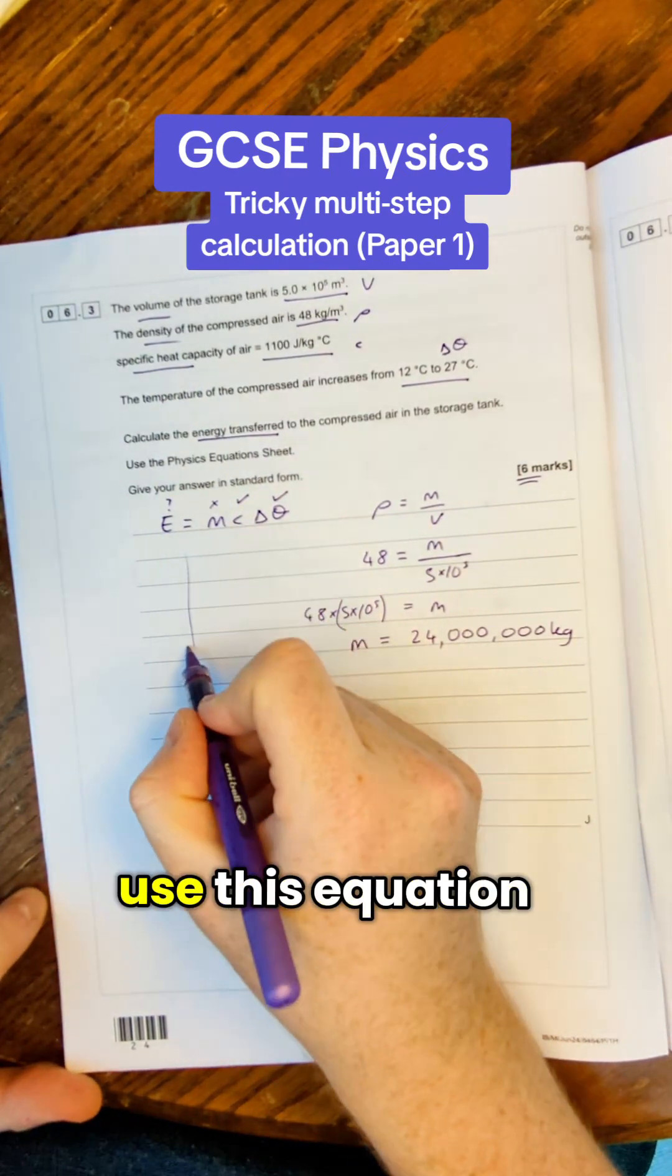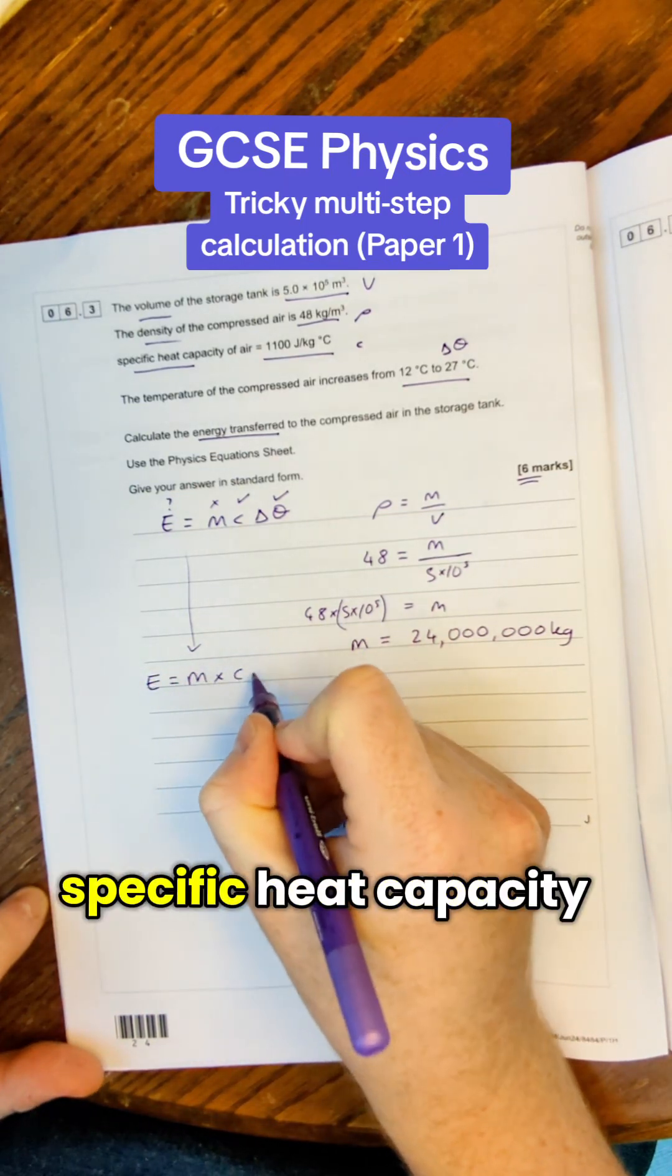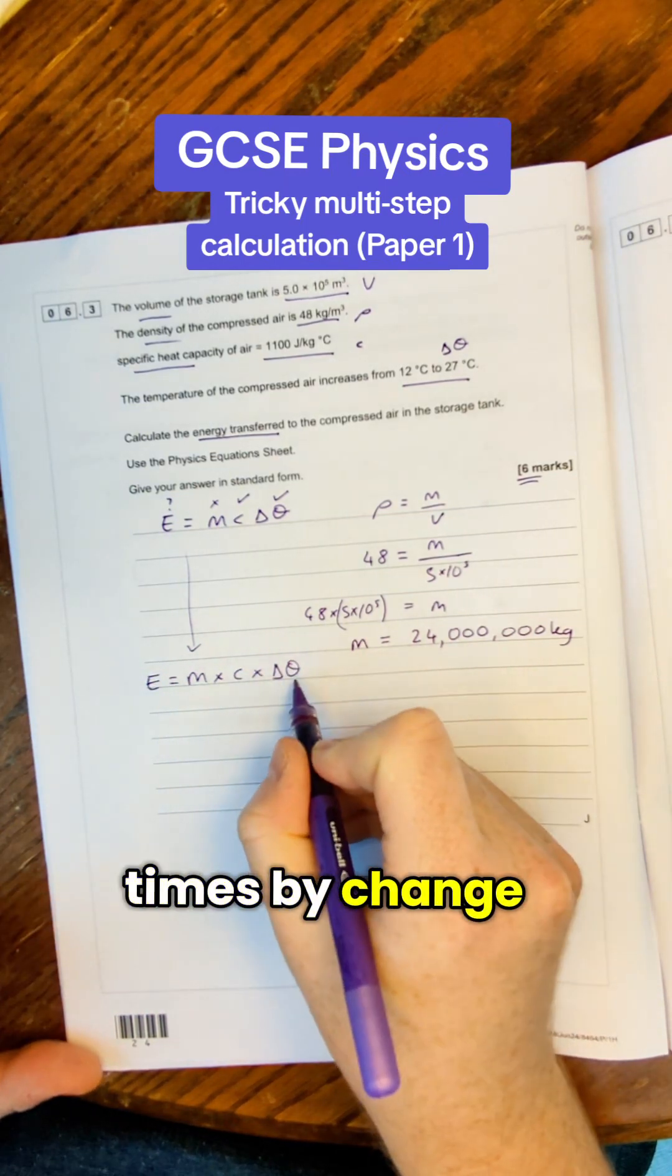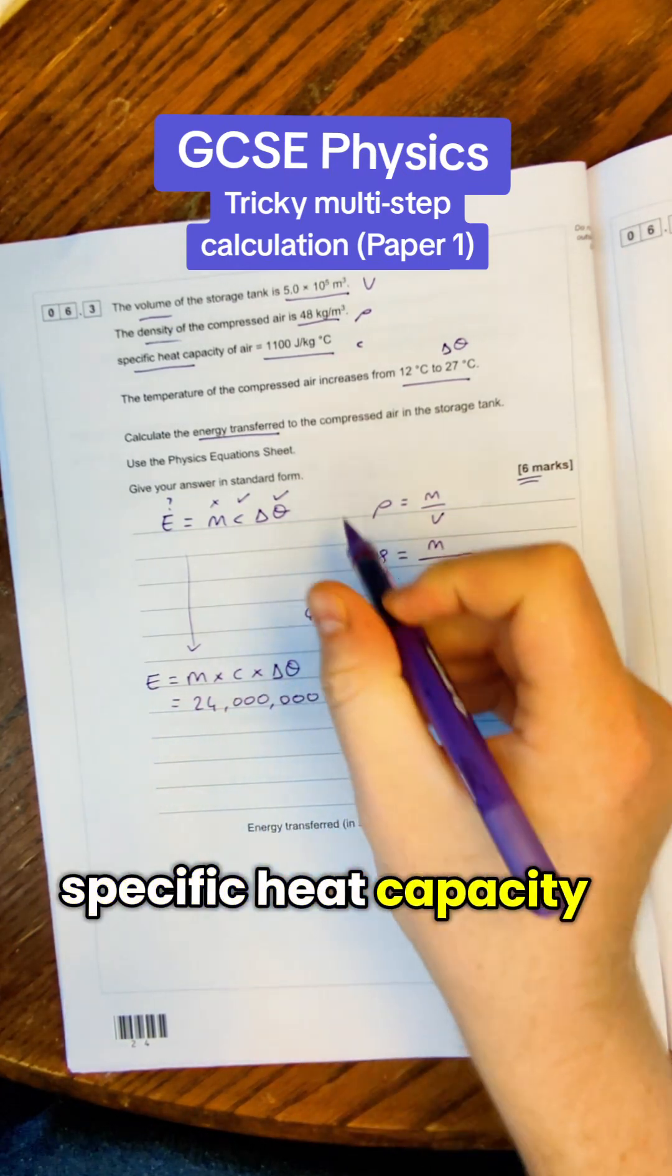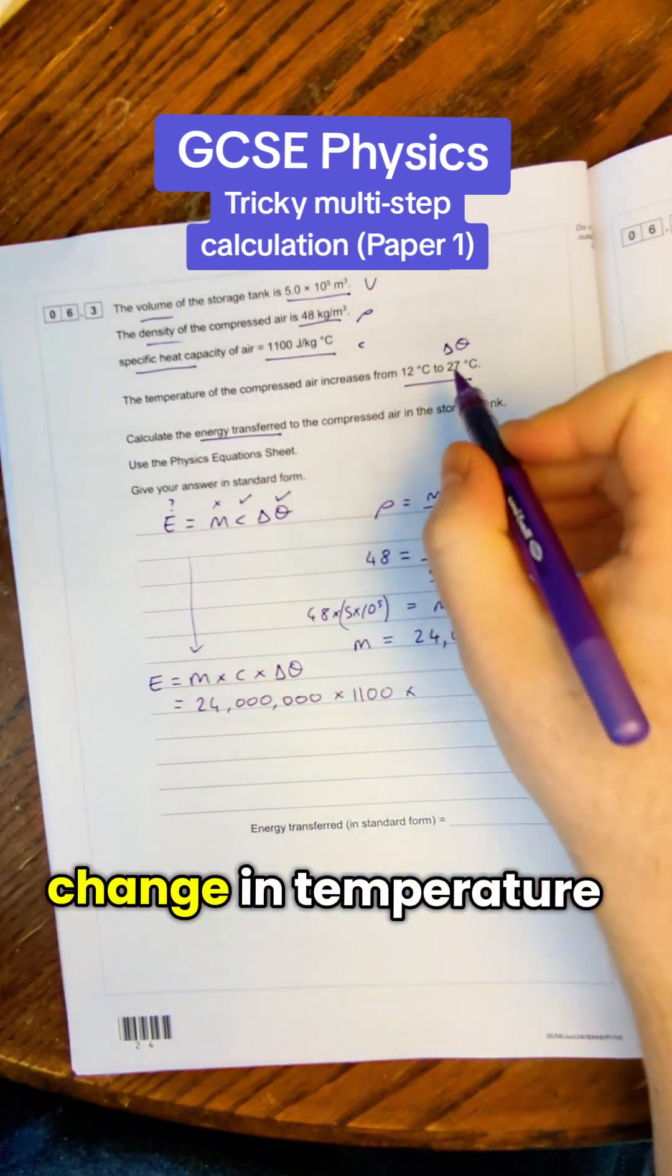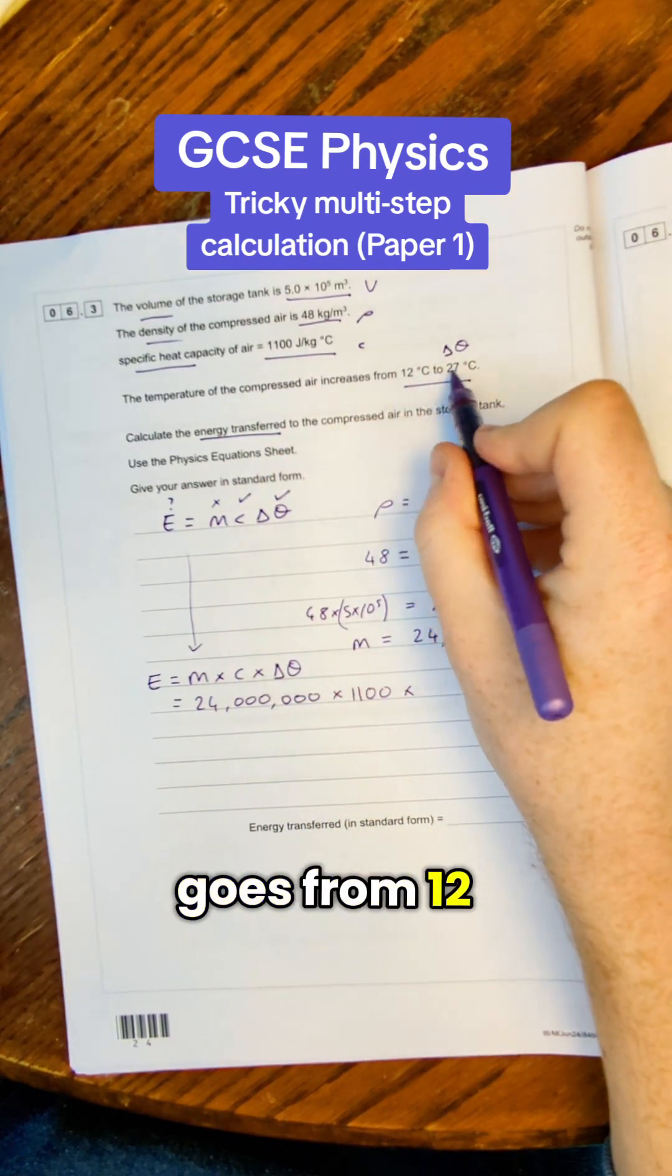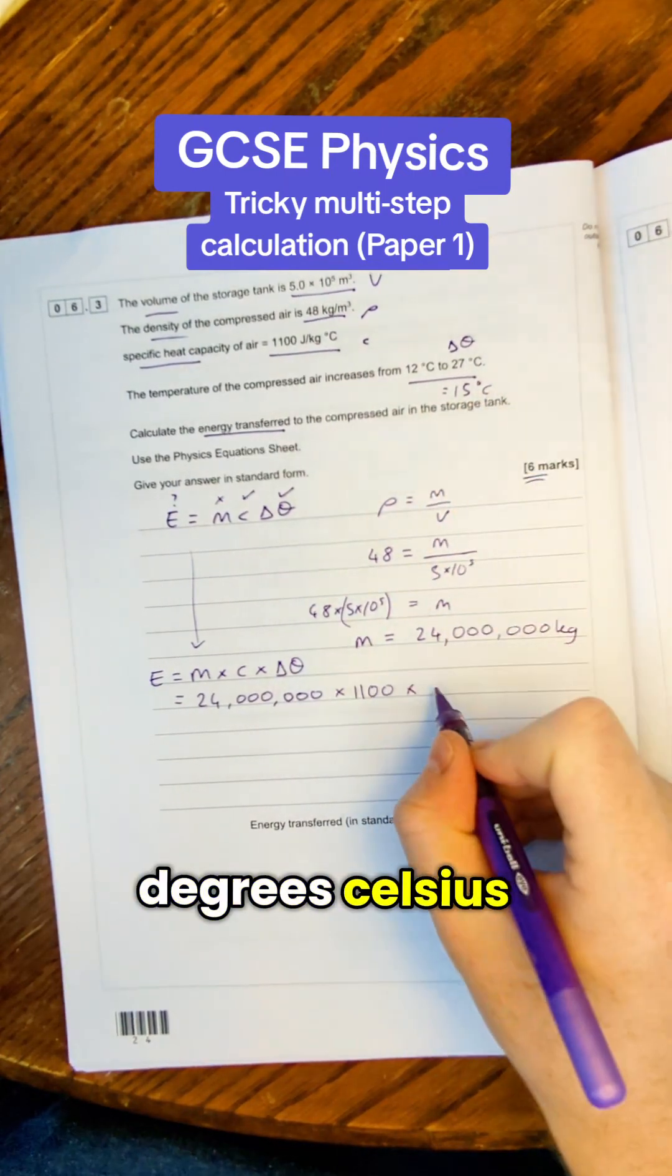Now we've got that we can use this equation to work out our energy. Energy equals mass times specific heat capacity times change in temperature. Mass we just worked out. Let's write these numbers in. Specific heat capacity is 1100 and the change in temperature goes from 12 to 27. So that's going to be 15 degrees celsius.